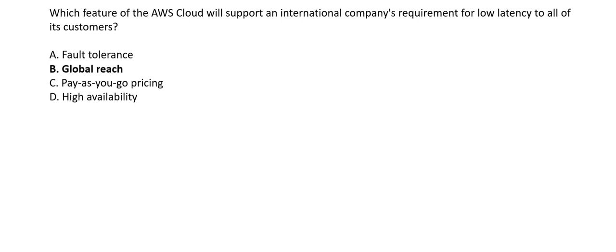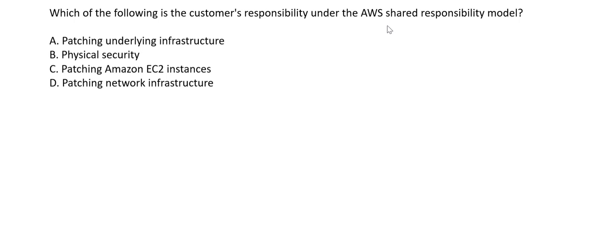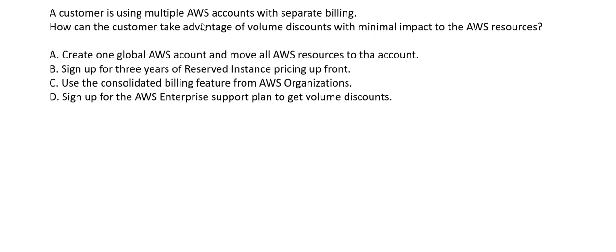The next question asks about the customer's responsibility under the AWS shared responsibility model. Patching underlying infrastructure is AWS's responsibility, not the customer's. Physical security is also AWS's responsibility because customers don't have access to the physical data centers. Patching EC2 instances is the customer's responsibility — when you deploy an EC2 instance, anything that needs patching is the customer's job. Patching network infrastructure is again AWS's responsibility. So option C is the right answer.